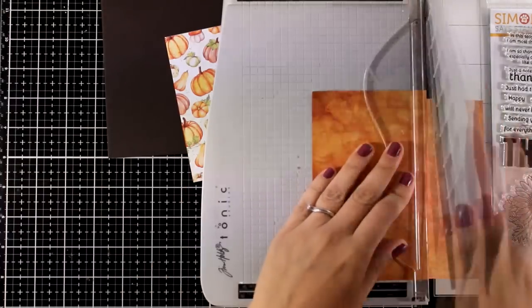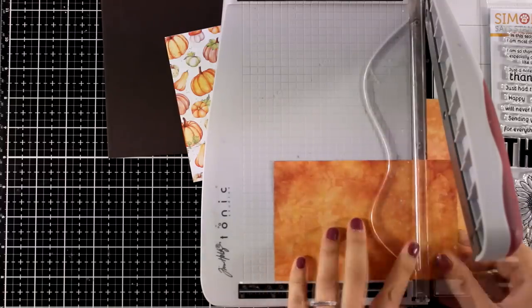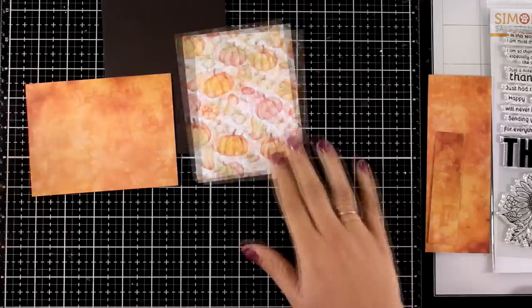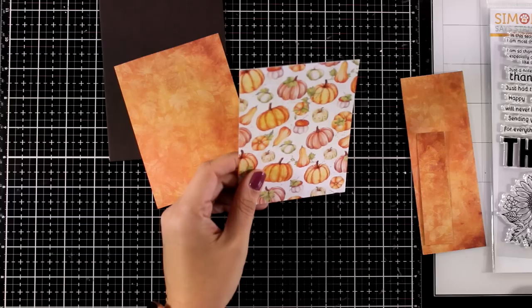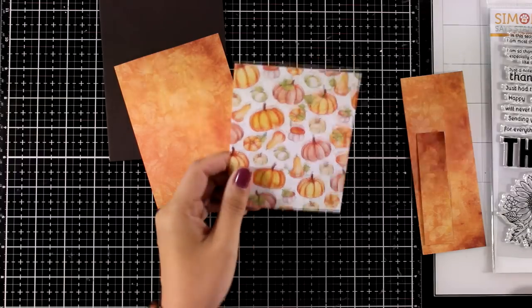I am repeating the same process for the other pattern paper. Again, 3¾ by 5. So when I lay one on top of the other, they are exactly the same. The pattern paper with the pumpkins is going to go on top and I'm going to distress it in many different ways.